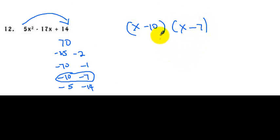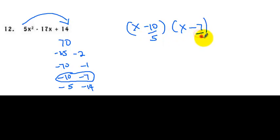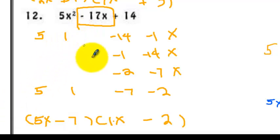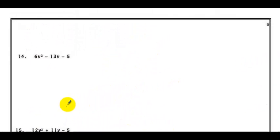Whatever value of a we used to slide and multiply to 14 — that's a equals 5 — we use it to divide the second term of each factor by 5. We can simplify negative 10 over 5 as negative 2. Negative 7 over 5 cannot be simplified as a whole number, so we slide 5 beside x, giving 5x minus 7. Comparing this with the trial and error method, we got the same answer: 5x minus 7, x minus 2.